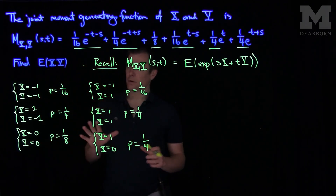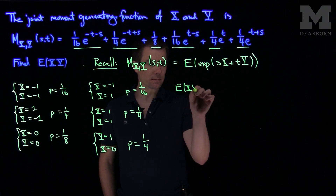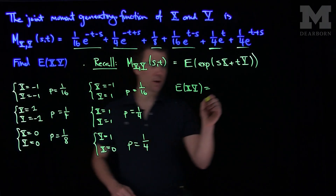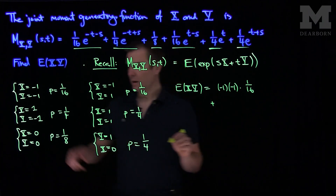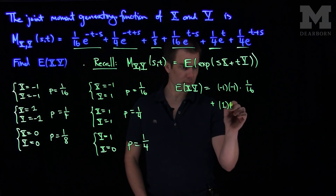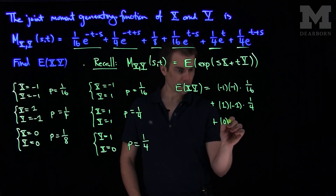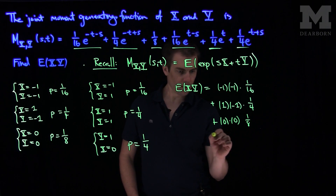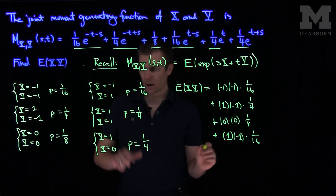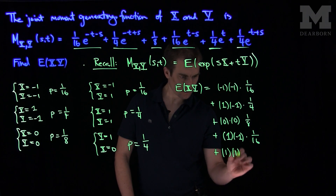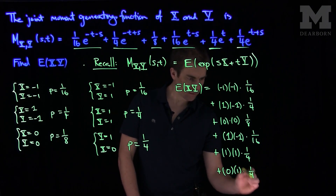Now we have all of the distributional values of x and y, and we can compute the expected value of x times y. It will be negative 1 times negative 1 with probability 1 over 16; 1 times negative 1 with probability 1 quarter; 0 times 0 with probability 1 eighth; negative 1 times 1 with probability 1 sixteenth; 1 times 1 with probability 1 quarter; and 0 times 1 with probability 1 quarter.